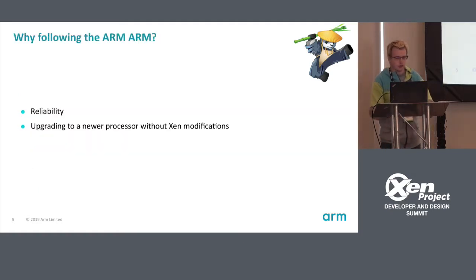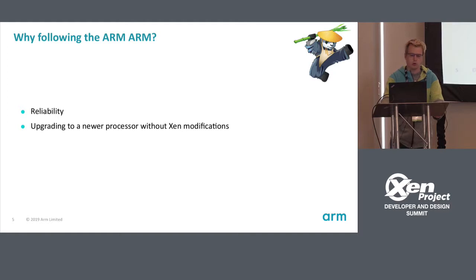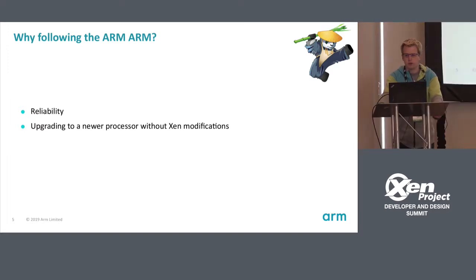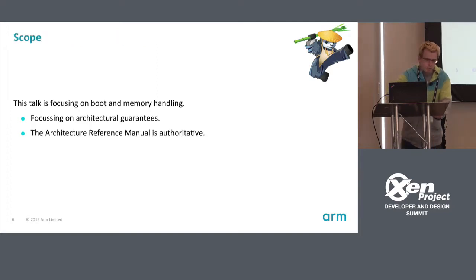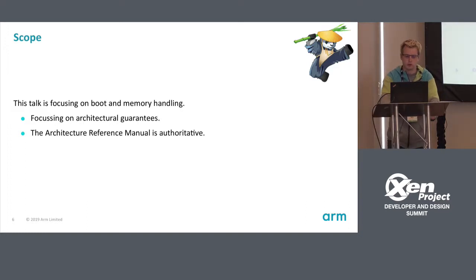So the main topic here is: why do we want to follow the ARM ARM? First is reliability — you don't want Xen running on a car platform crashing randomly every five minutes or every hour. You also want to be able to port to newer processors without Xen modifications, moving to faster, more aggressive processors. There's a lot to talk about; I'm only going to scratch the top of everything, focusing mostly on architectural guarantees. The ARM ARM is authoritative — if I say something different from the ARM ARM, the ARM ARM is correct.